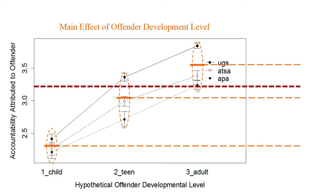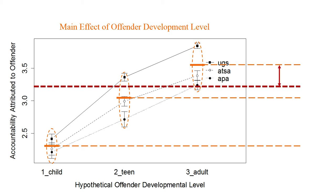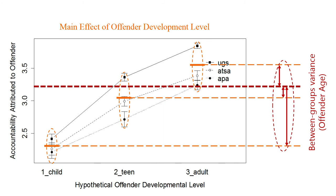The grand mean for the study is not in the middle because there were far more adult protocols than child or teen protocols, so the mean is dragged up a bit. The variability between the means — their average deviation from the grand mean — is the effect of offender developmental level. We divide that by within-group variance to get the mean square representing the main effect of offender developmental level.